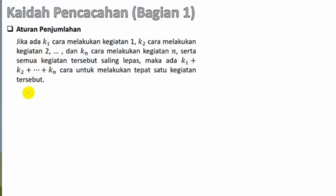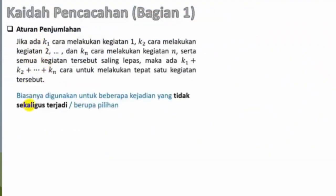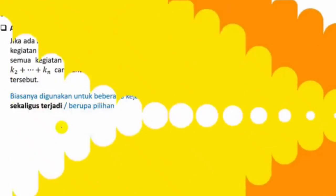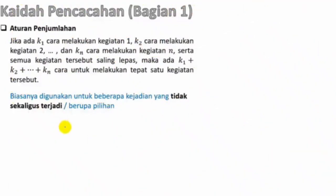Untuk aturan penjumlahan, ini biasanya digunakan untuk beberapa kejadian yang tidak sekaligus terjadi, atau berupa pilihan. Biasanya pada soalnya dihubungkan dengan kata 'atau', tapi tidak selalu. Untuk lebih jelas, perhatikan contoh berikut ini.